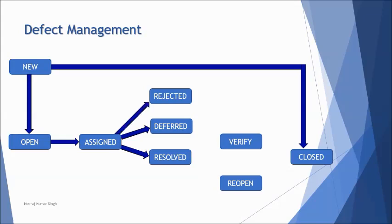When a defect is rejected, we may need to provide additional information to justify what exactly the defect is. It might be related to the test environment or compatibility issues, so we need to elaborate to the developer so they can understand and fix the issue.